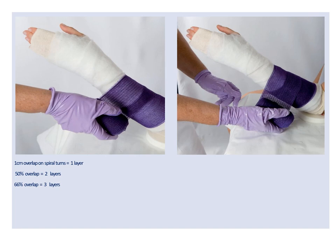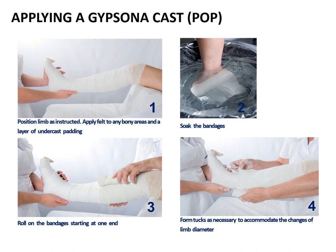Regarding synthetic casting — and the same applies to gypsona — a one-centimeter overlap on each spiral turn results in one layer of casting material; 50% overlap translates to two layers; and 66% overlap to three layers. For applying a gypsona plaster of Paris cast: position the limb before starting; apply felt to any sharp bony areas; apply a layer of undercast padding as uniform as possible; soak the bandages fully; roll the bandages starting at one end — do not pull, rather roll; form tucks as necessary to accommodate changes in limb diameter, specifically in the lower limb.